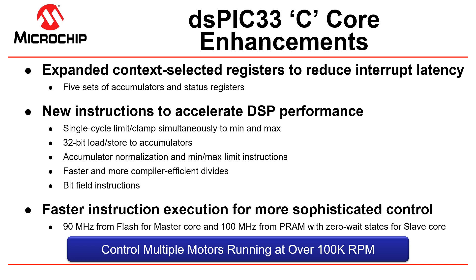The C core also has new instructions that accelerate DSP performance, like a new instruction to clamp the register value to a low or high value in a single cycle, a 32-bit load to store in the accumulators, accumulator normalization with min and max limit instructions, and a new faster divide instruction and an embed bit field instruction. All of these new features and higher execution speed will further accelerate your application's performance.